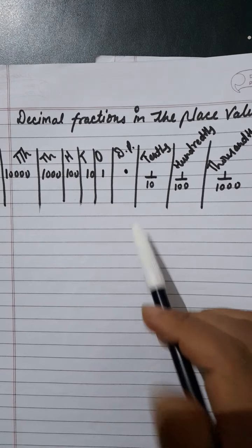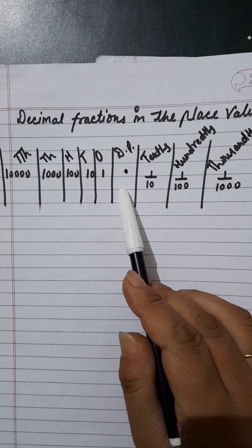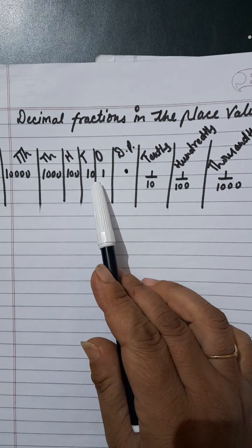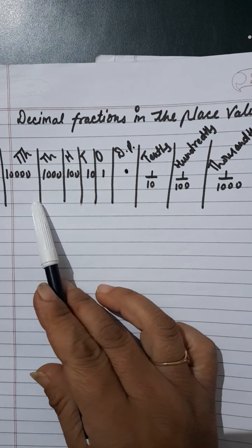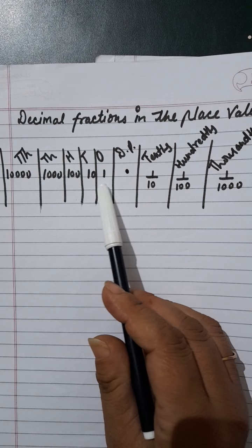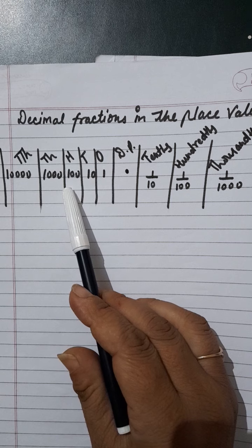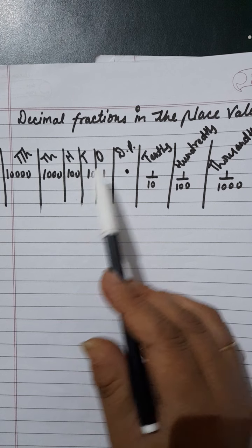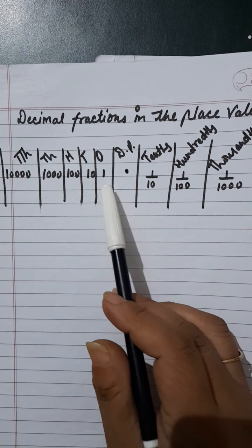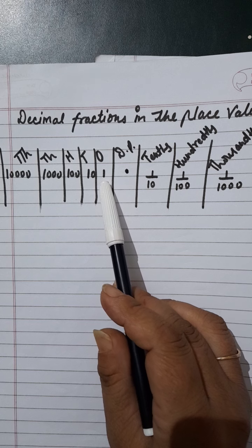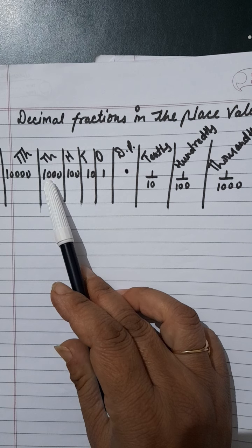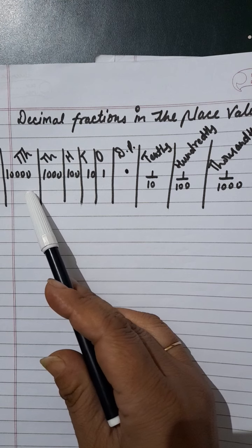You can see here a place value chart that represents values after the decimal and before the decimal. As we have learnt earlier, the place value of numbers in the number system — before the decimal we write: ones, tens, hundreds, thousands, and ten thousands. The place value of ones is one, tens is ten, hundreds is hundred, thousands is thousand, and ten thousands is ten thousand.